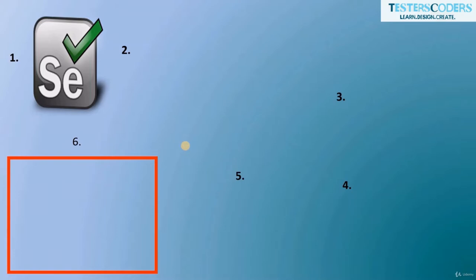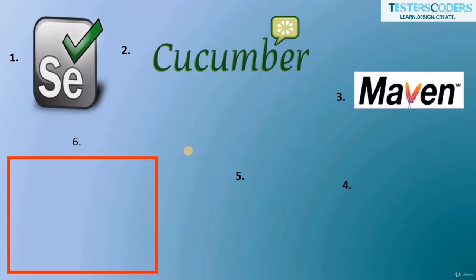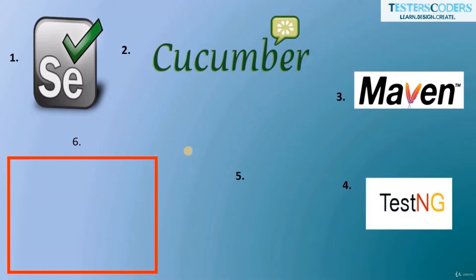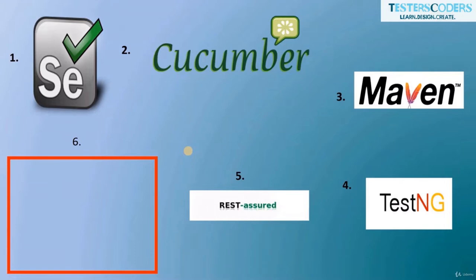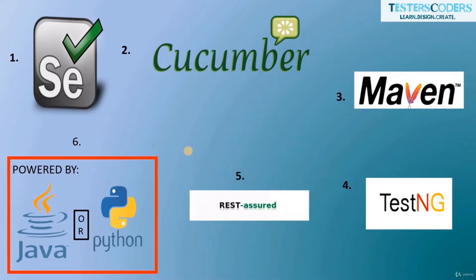Cucumber is a tool that allows us to distinguish one scenario from another within your scripts. Maven provides a folder structure where you can keep your test code scripts and resources such as Excel sheets separately. TestNG helps with the priority setting of your code. REST Assured is used for API testing, allowing you to validate data easily without a UI. Selenium supports programming languages like Java, Python, Ruby, and Pearl.